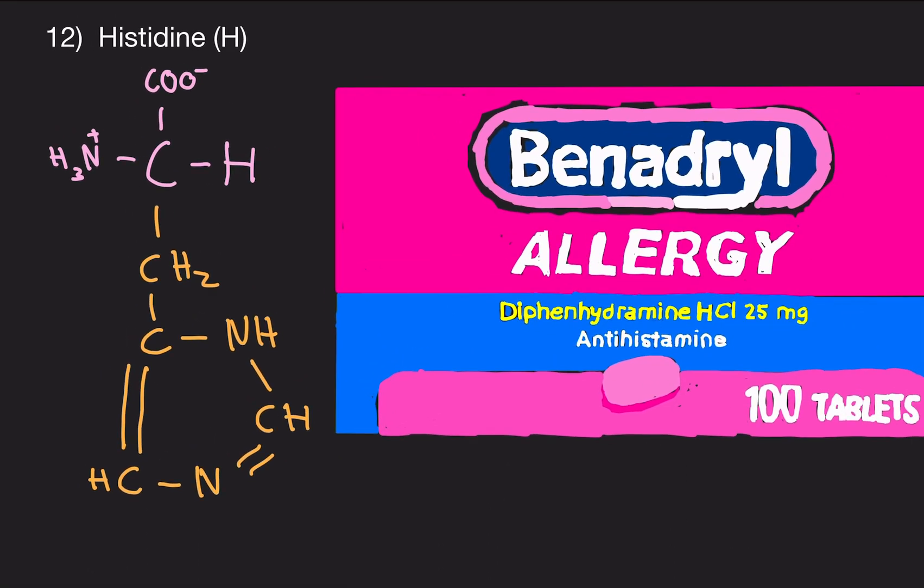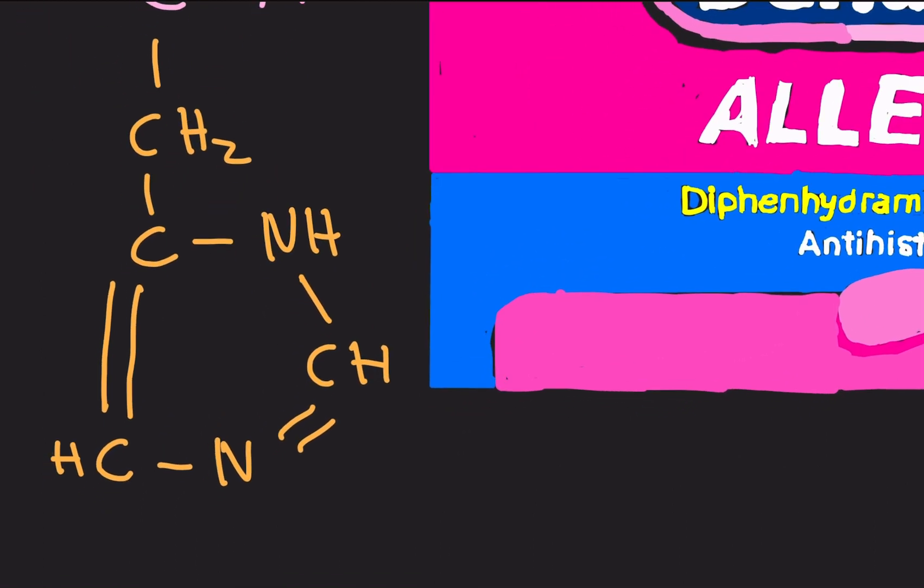Let's do this one now. 12. Histidine, abbreviated with an H. Usual stuff: alpha carbon, hydrogen, carboxyl, amino group. This R group is different. Histidine, for the R group, has a CH2. Now that is bonded to a carbon. This carbon is in a ring-like structure. This carbon is bonded to an NH group. This NH group is bonded to a CH which is double bonded to a nitrogen, which is bonded to a CH, which is double bonded to the carbon we talked about.